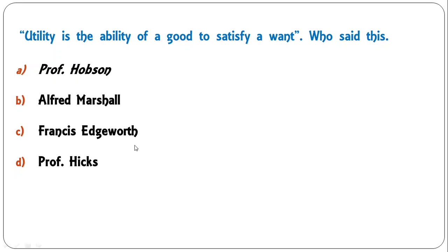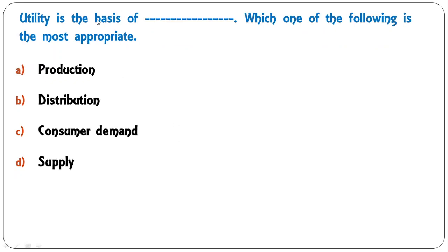This definition of utility was given by Professor Hobson, so A is the correct answer. Next: 'Utility is the basis of which of the following?' — production, distribution, consumer demand, or supply? The correct answer is consumer demand. Utility is the basis of consumer demand; demand depends on the utility of the product.